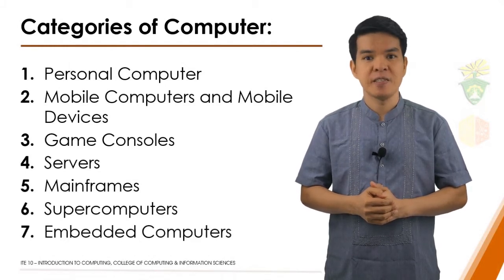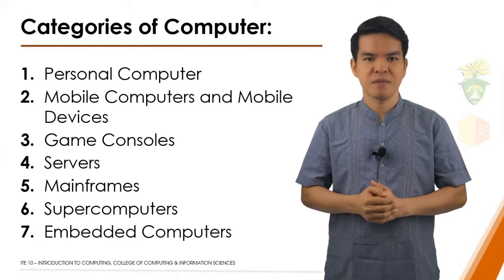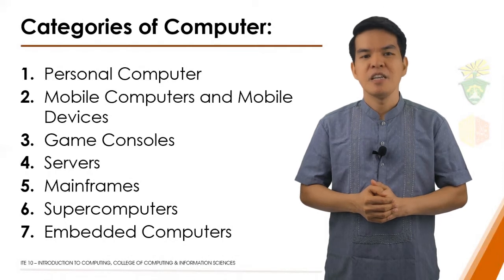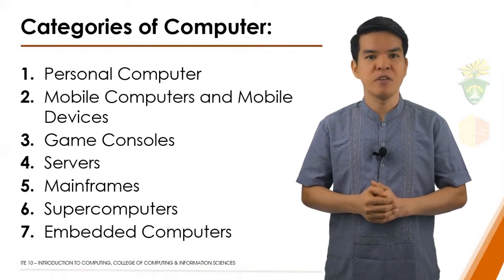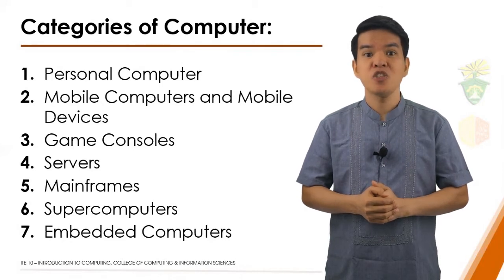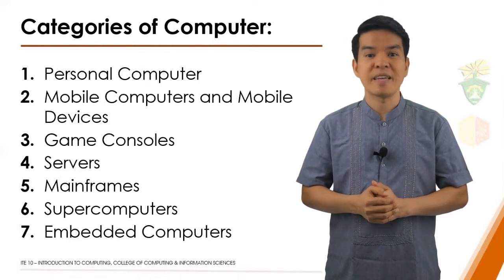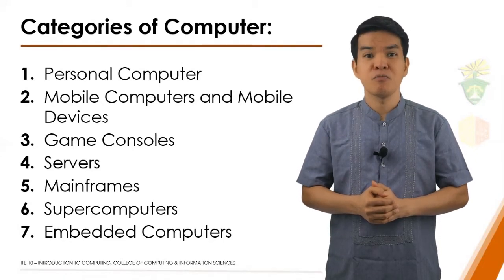A computer's size, speed, processing power, and price determine the category it best fits. Due to rapidly changing technology, however, the distinction among categories is not always clear-cut. The strain of computers and devices with overlapping technologies, called convergence, leads manufacturers to continually release newer models with similar functionality. That is why, when consumers replace outdated computers and devices, they should dispose of them properly.